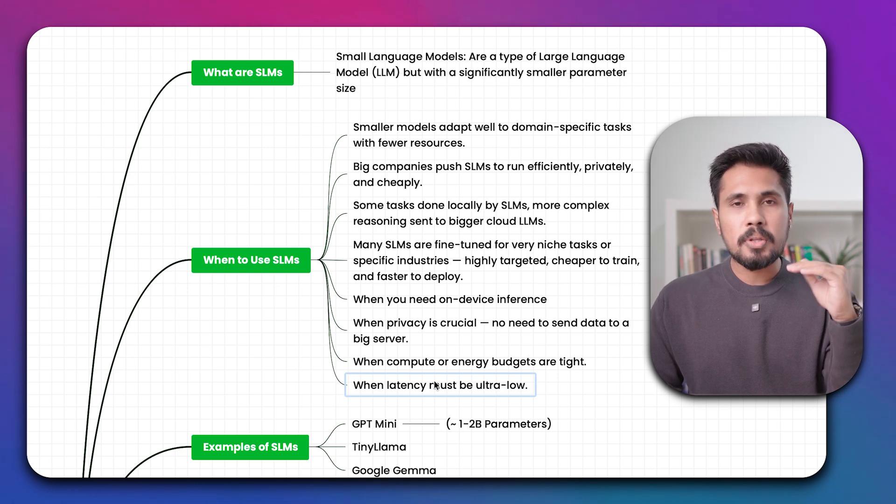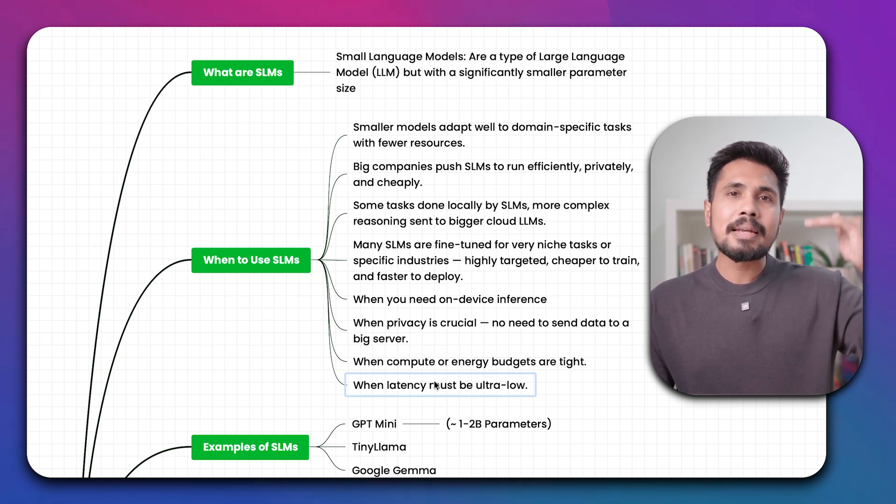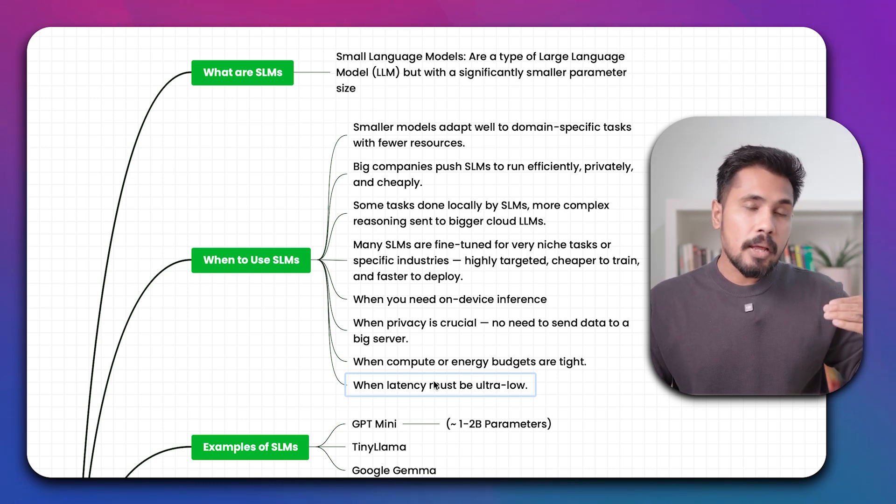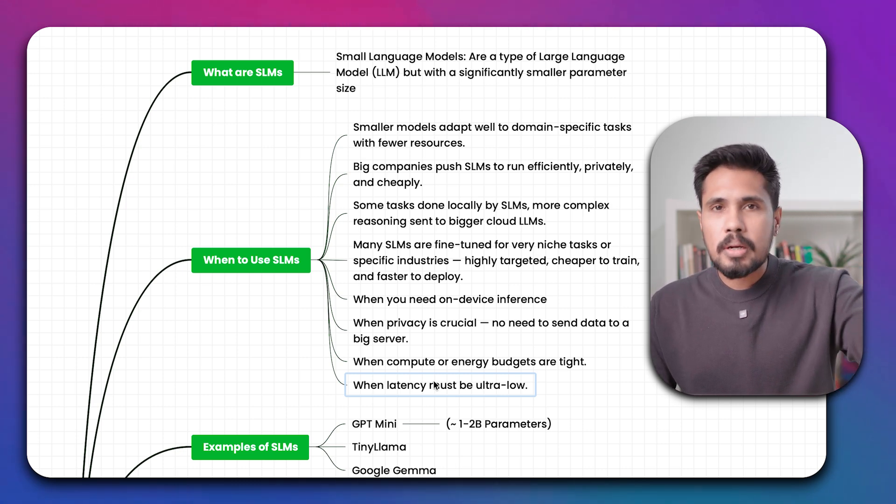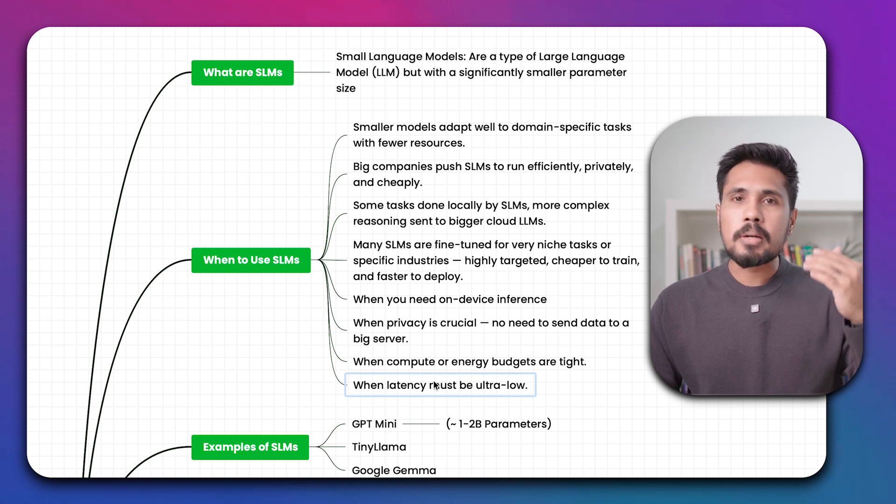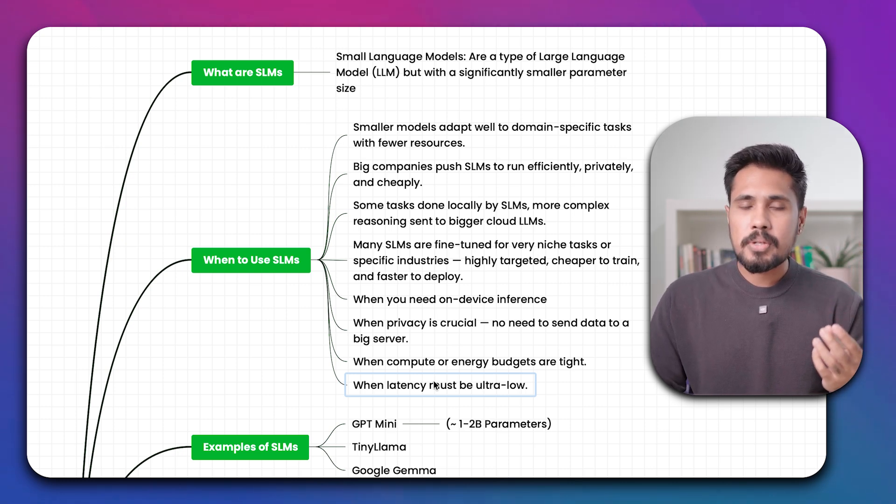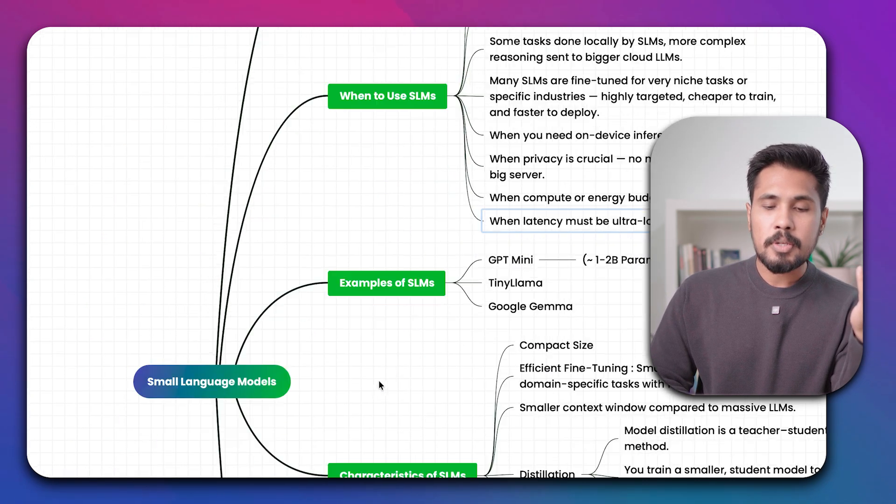And latency. When you are trying to go with language models, the LLM model is going to be on the cloud interface. Whenever you ask a prompt, it needs to go to the cloud, interact with it, come back. There's going to be a bit of latency. If you want to reduce the latency, then we can go with SLM, small language models.